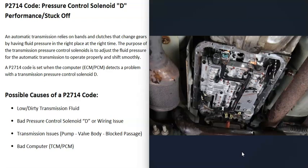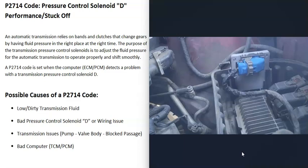The last possible cause is a bad computer — such as a bad transmission control module or powertrain control module. This is fairly rare; when you get a P2714 code, it's usually something else like a transmission issue or a problem with the solenoid or wiring. However, if you do suspect a bad computer, make sure the battery is good, the alternator is charging properly, and there's a good ground, because these computers need a stable power supply or it can cause issues.